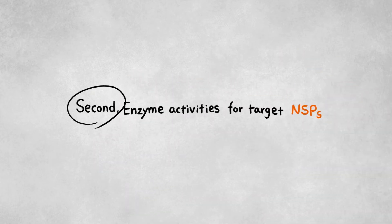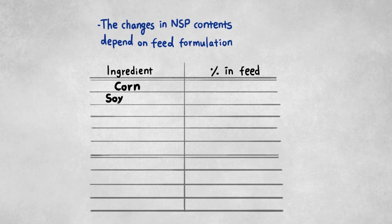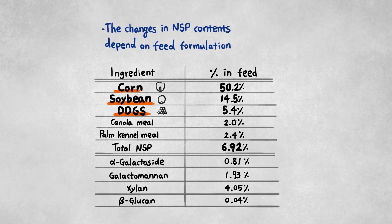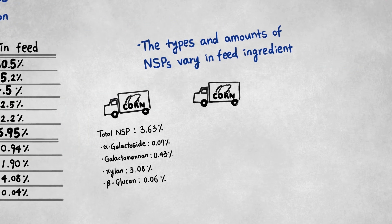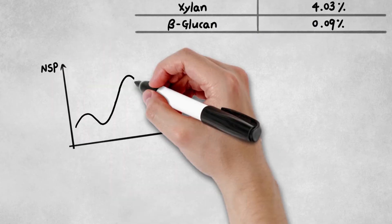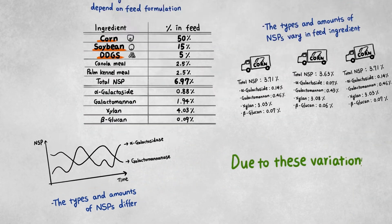Secondly, enzymes are highly specific to either a single substrate or a small group of similar substrates. However, NSPs profiles are very different in various feed ingredients. NSP contents in feed raw materials also differ depending on geographic areas and seasons.